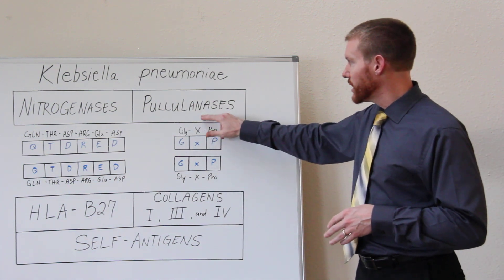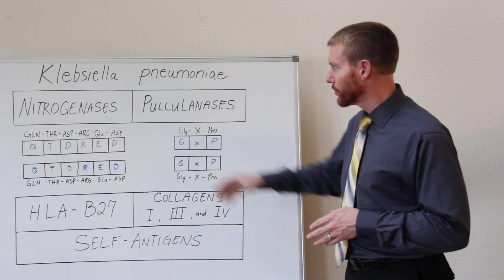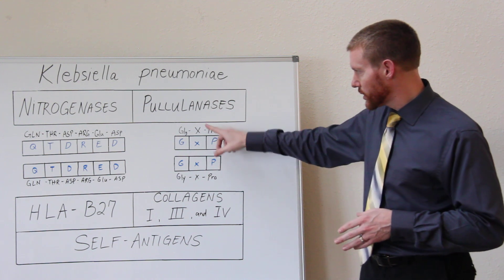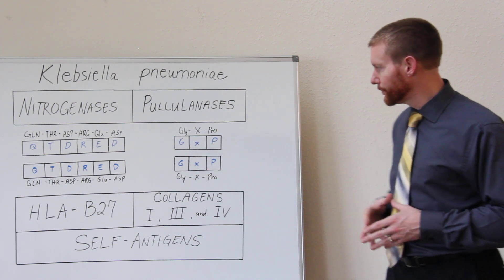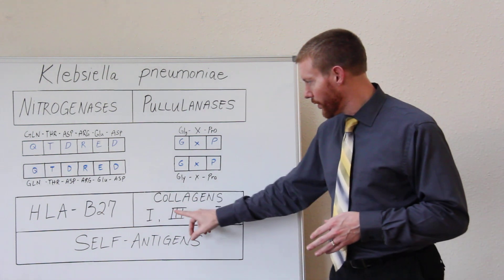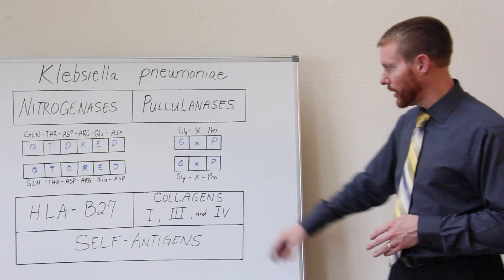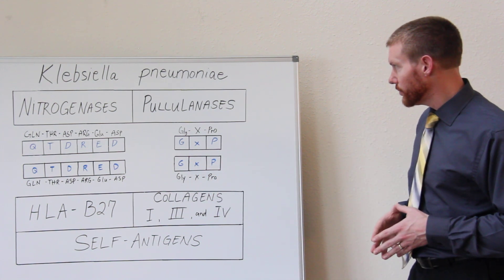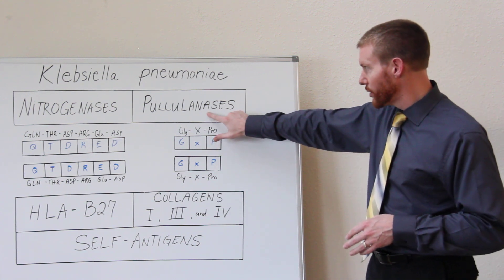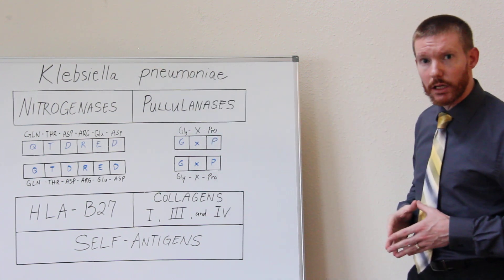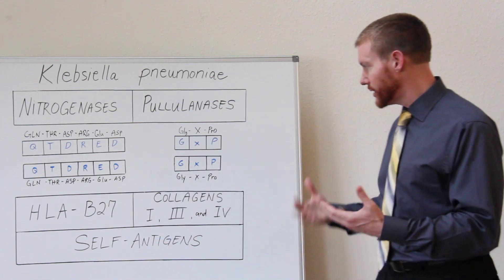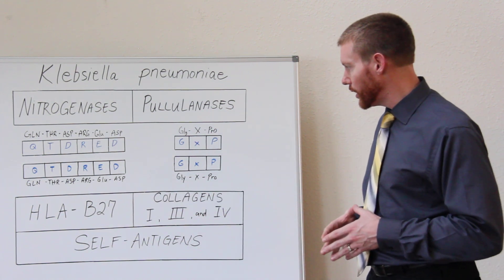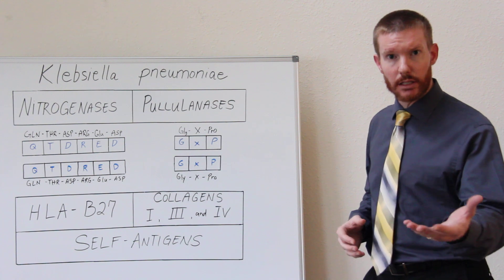On this side, we have another protein — the pololinase enzyme that's produced by the bacteria Klebsiella — and it's represented by an amino acid sequence represented by the letters GXP. Collagen types 1, 3, and 4 are also represented by the amino acid sequence GXP. So again, when the immune system identifies this protein produced by Klebsiella bacteria in the gut, it will go throughout the bloodstream and attack tissues containing collagen types 1, 3, and 4, again found in tendons, ligaments, joints, and discs of the spine.